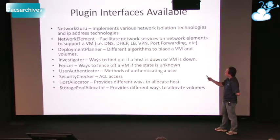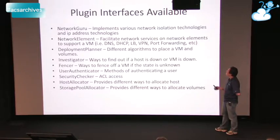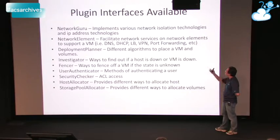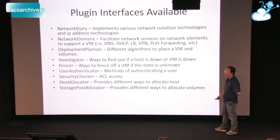These are the things available today to implement specific functionalities that CloudStack needs. A network guru implements network isolation — it understands what is the physical network, how to do isolation on it, and what IP addresses can be issued. A network element helps with the network services available to VMs: things like DNS, DHCP, load balancing, VPN, and port forwarding. For example, our NetScaler would be implemented as a network element and currently supports load balancing, with more features that can be added.